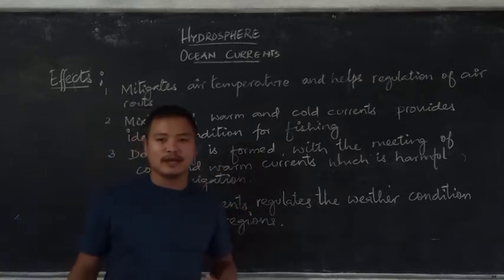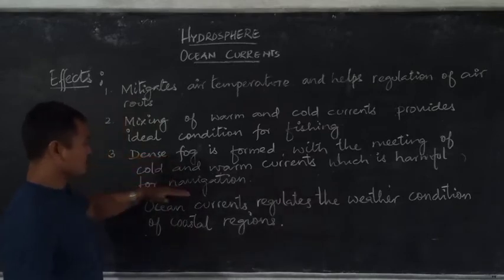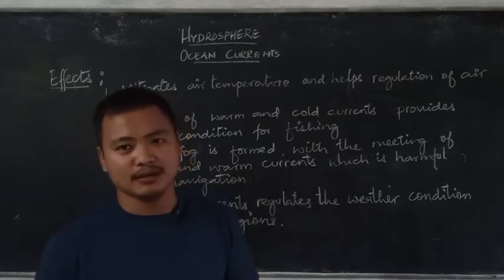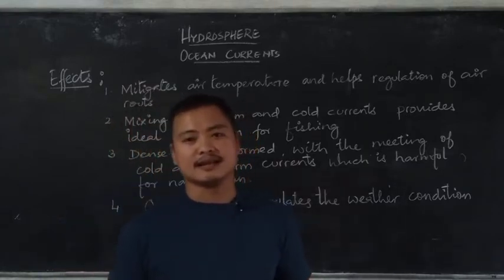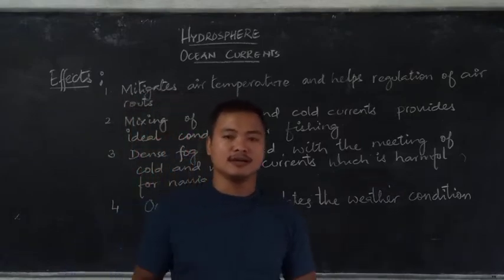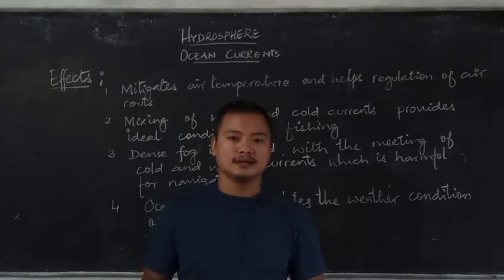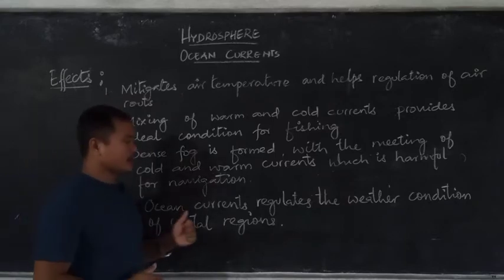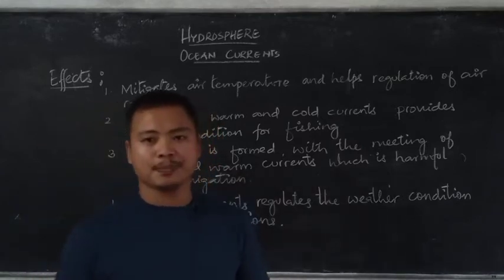Third, we see that with the mixing or meeting of cold and warm ocean currents, it results in the formation of dense fog. These dense fogs are very harmful in terms of navigation. A very good example is the movie Titanic, based on the real incident that took place in 1912 in the month of April — it was because of this dense fog that the ship hit the iceberg, causing lots of loss of life.